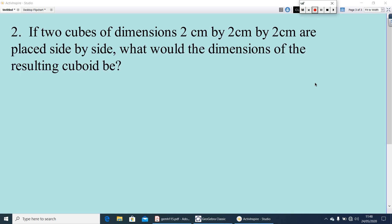Here you have another question. If 2 cubes of dimensions 2 cm by 2 cm by 2 cm are placed side by side, what would be the dimensions of the resulting cuboid? Here, 2 cm by 2 cm by 2 cm means length is 2, breadth is 2, and height also 2. Now, what you have to do is find the dimensions of the resulting cuboid.